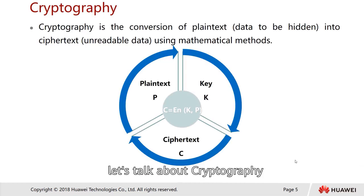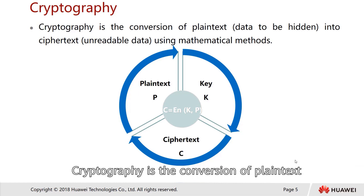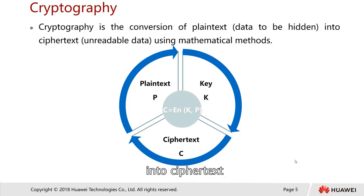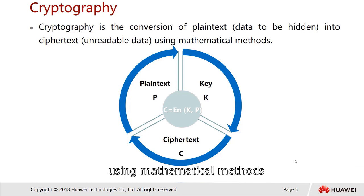First of all, let's talk about cryptography. Cryptography is the conversion of plain text — the data to be hidden — into ciphertext, which means unreadable information, using a mathematical method.